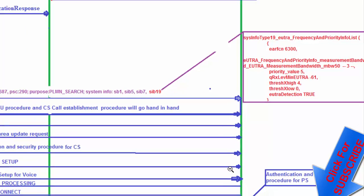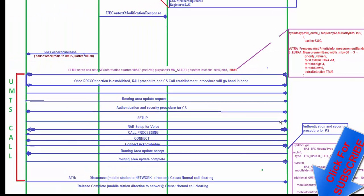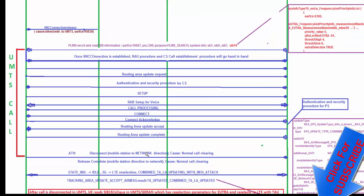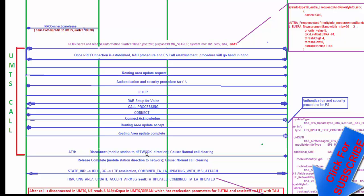After the PLMN search and reading SIB 157 and SIB 19, the UE sends an RRC Connection Request. For both CS and PS, establishment signaling happens — including RRC Connection Request procedure, authentication, security setup, call processing (connect), and Routing Area Update and Routing Area Update Complete for the PS call. This completes the transition from the LTE connected mode to the UMTS network.